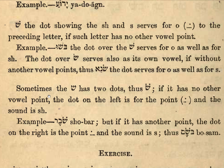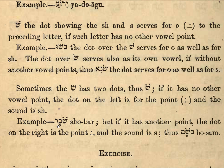Sometimes the Shin has got two dots. If there's no other vowel point underneath, then the dot on the left is for the point and the sound is going to be SH — so it's SH-O. Most of the time if you see this, it's going to be SH-O. Here there's no vowel underneath the letter so there has to be a vowel, giving us SH-O-BE-ER.